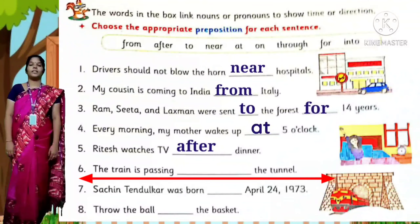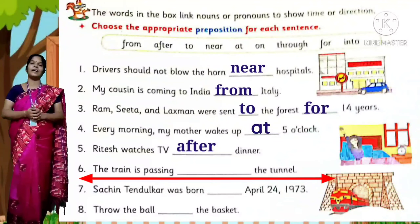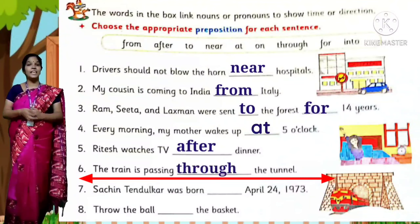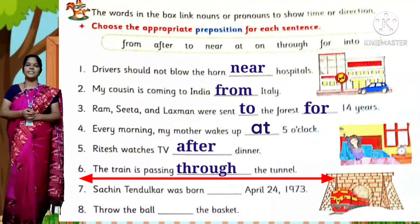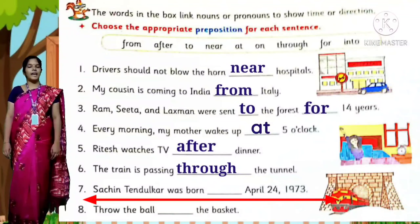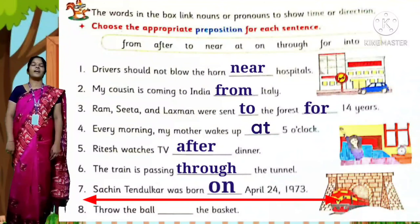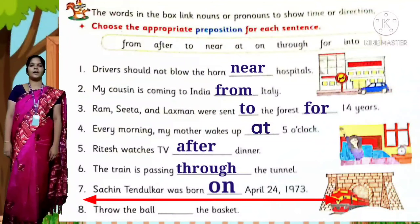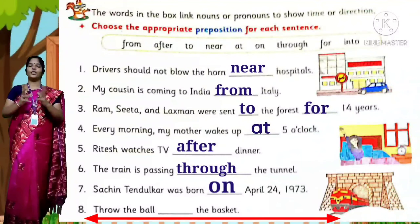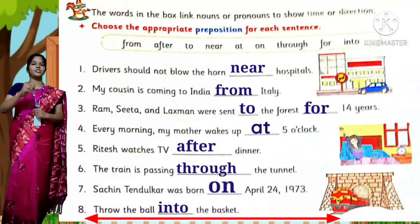The train is passing ___ the tunnel — through the tunnel. Seventh question: Sachin Tendulkar was born ___ April 24, 1973 — on April 24, 1973. Last question: Throw the ball ___ the basket — into the basket.